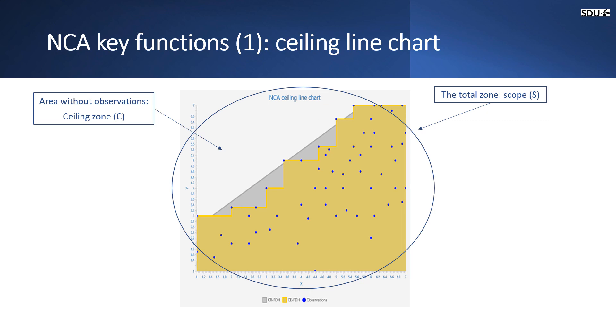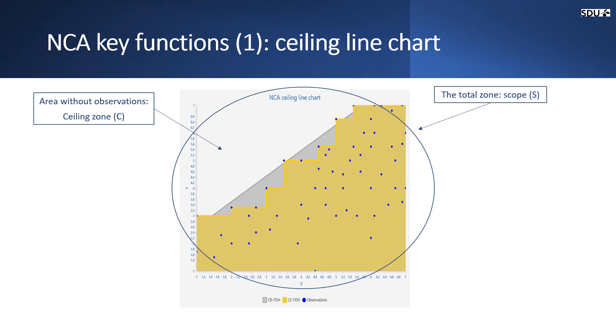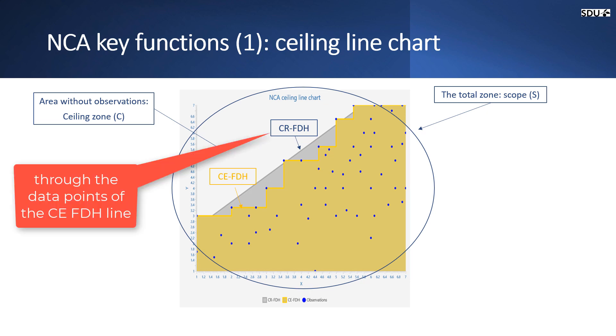We have two ceiling lines here as well. They separate the area with observations from the area without observations. There are commonly two default ceiling lines. One is CE-FDH line. You can see that this is a stepwise line. Another is CR-FDH line. This is a simple linear regression line through the data points.